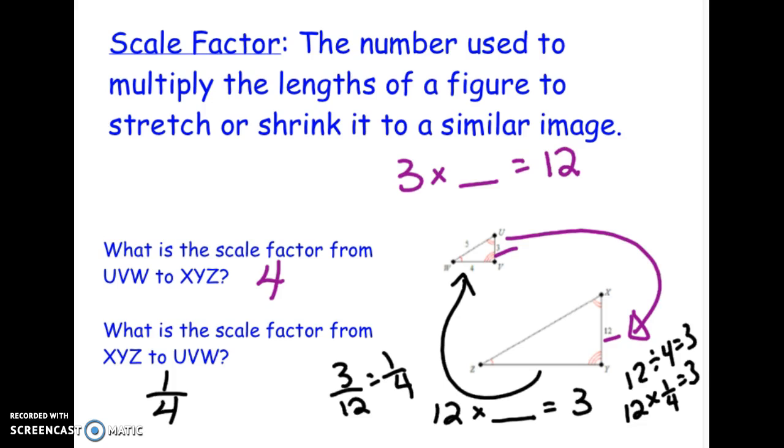You could have done that same thing in this one above where you did 12 divided by 3, and lo and behold, that equals 4. So scale factor is always what you multiply to get from one shape to the next shape. That's a little bit about similarity and scale factor. Hope it helps you.